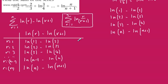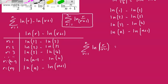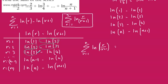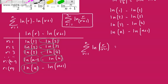So if we now consider the sum from R equals 1 to N of the natural log of R over R plus 1, all of these terms are going to cancel. We know from our work before that they cancel off — that one cancels with that one, that one cancels with that one, and so on and so forth, right the way down to this point here. So all of these are going to cancel.